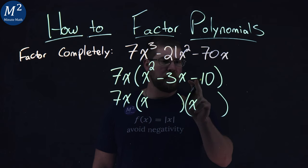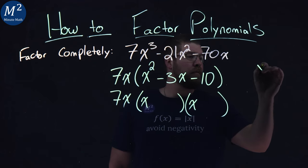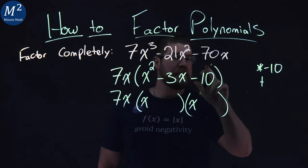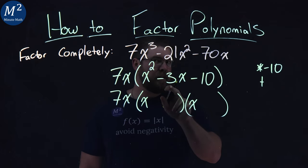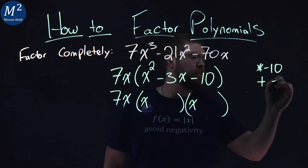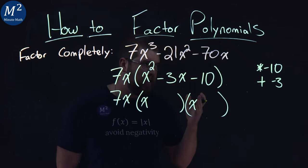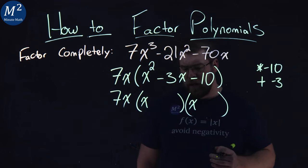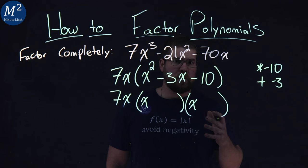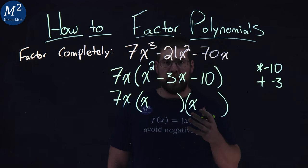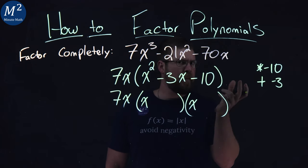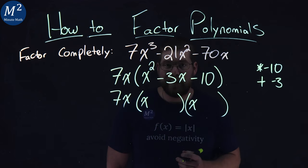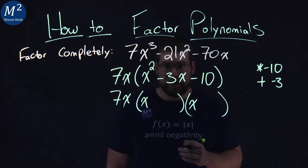What two numbers multiply to be a negative 10 — that's the c value — but add to be a negative 3, the b value? We want to think: what two numbers multiply to be a negative 10 but add to be a negative 3? The two numbers I'm gravitating towards are 2 and 5. I know I can combine them through subtraction to get a 3, and they multiply to be a 10. Which one's negative, which one's positive?